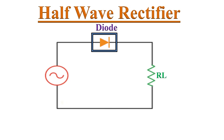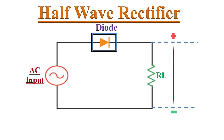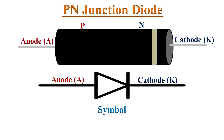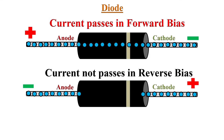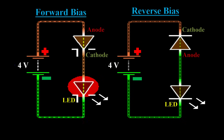A half-wave rectifier is the simplest form of a rectifier. It uses only one diode for the transformation of AC input into DC output. In a previous tutorial on the PN junction diode, we saw that a semiconductor diode allows current flow in the forward direction from anode to cathode, but not in the reverse direction. This feature of conducting current in one direction makes the diode ideal for rectification.